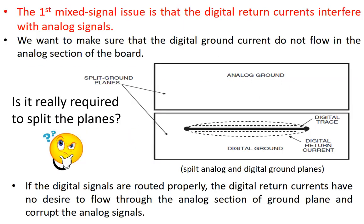The first mixed signal issue is that digital return currents interfere with analog signals. We want to make sure that digital ground currents do not flow in the analog section of the board. We often hear about splitting the grounds — separating digital and analog ground. But do you think it is really required to split the planes? What you see in the picture is called a split plane. If the digital signals are routed properly, the digital return currents have no desire to flow through the analog section of the ground plane and corrupt the analog signals.